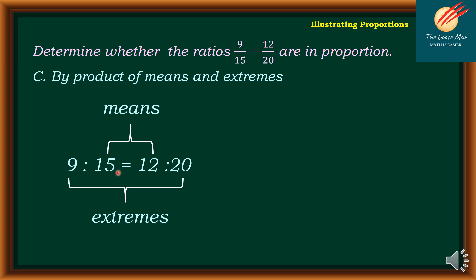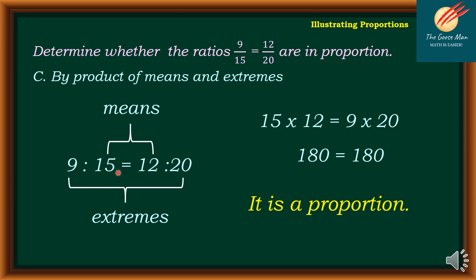It is a proportion if the product of the means is equal to the product of the extremes. So, is 15 times 12 the same as 9 times 20? We have 15 times 12 equals 180, while 9 times 20 is equal to 180. Clearly, it is a proportion.